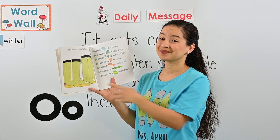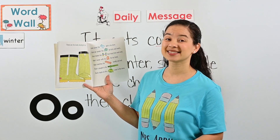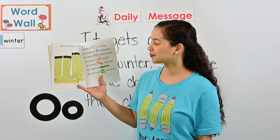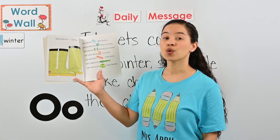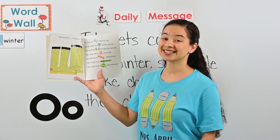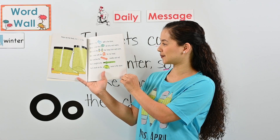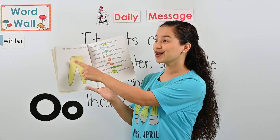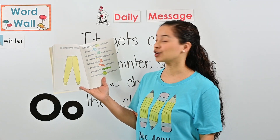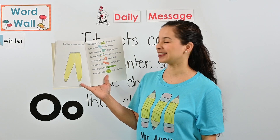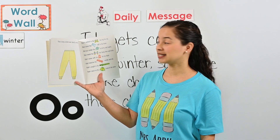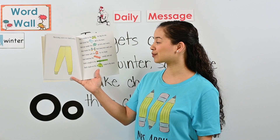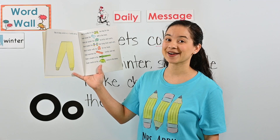'These are the boots, too big for me, that cover the pants, stiff in the knee, that go under the sweater, all itchy and warm, that meets the mittens that hang from each arm, that I wear with the stocking cap for my head, that matches the scarf, wooly and red, that's stuck on the jacket I wear in the snow.' So he wears boots to keep his feet nice and warm. 'This is the long underwear, bunchy and hot, that is stuffed in the boots, too big for me, that cover the pants, stiff in the knee, that go under the sweater — that's stuck on the jacket I wear in the snow.' Wow, he has to wear a lot of things in the snow!